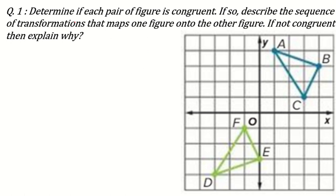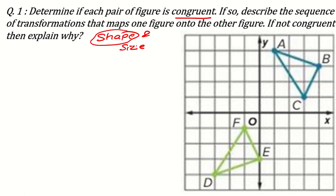The first question type can be: determine if each pair of figures is congruent. Before moving further into the question, you must revise what is the meaning of congruent. Congruent means same shape and size. Their shape should be the same and their size also — dimensions should be the same, they should not change.